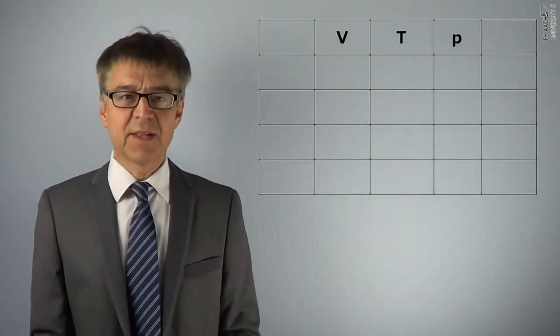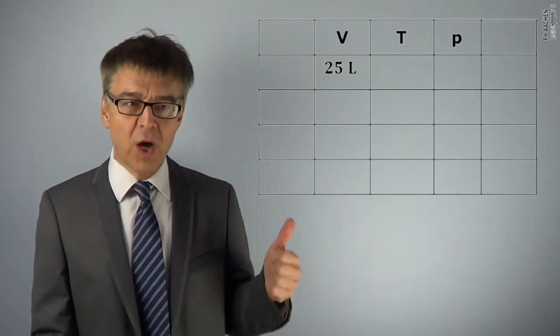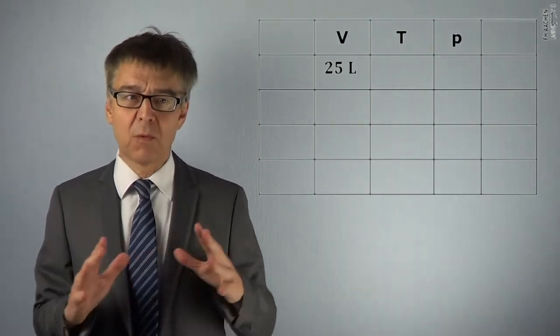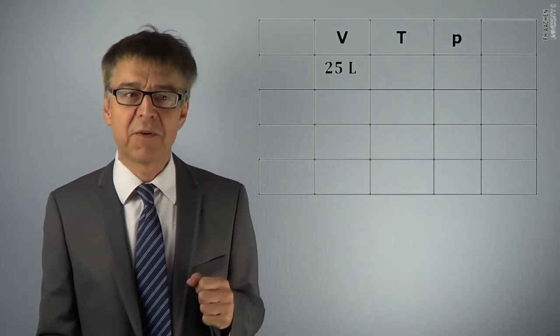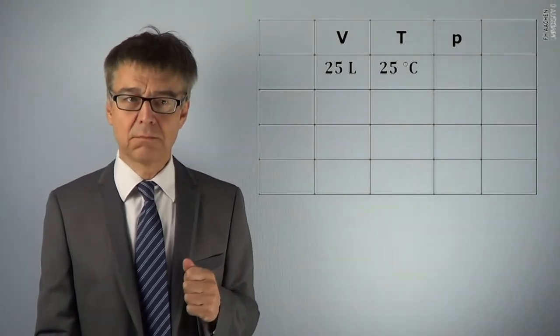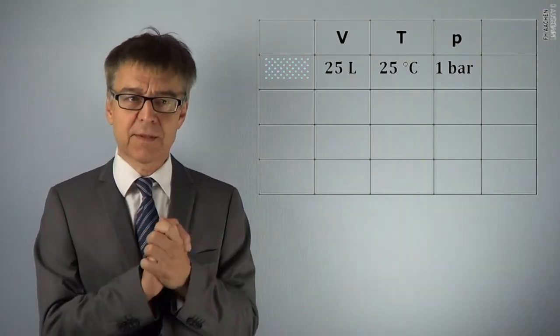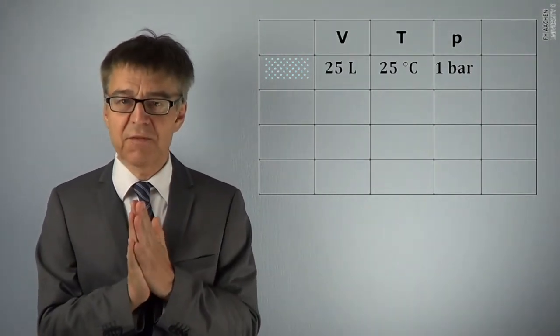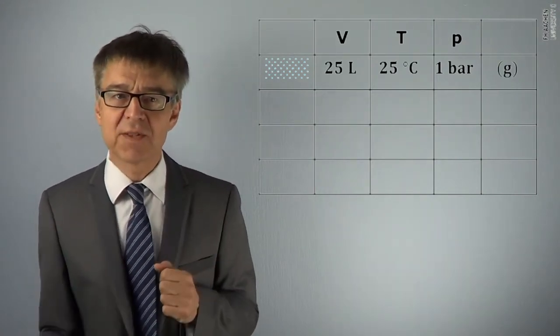In our system, there is one mole of carbon dioxide, 44 grams. We now set it to a number of different states. State 1 is described by a molar volume of 25 liters and a temperature of 25 degrees Celsius. In this state, the system is a gas.